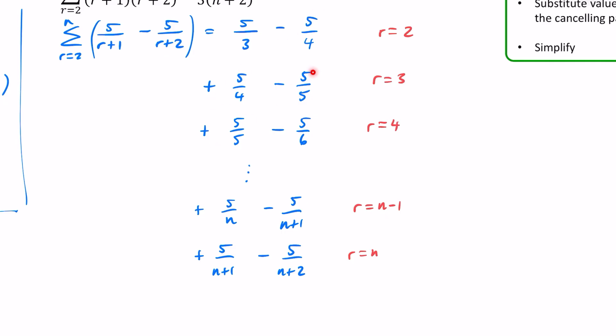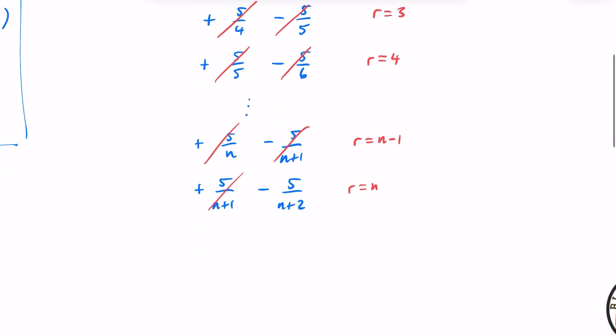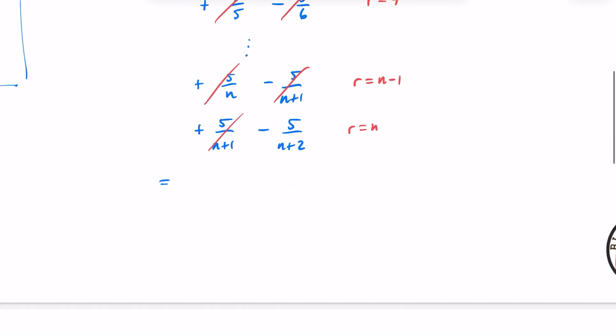So we get these cancel, those and these, leaving us just with 5/3 minus 5/N minus 5/(N+2). So this is 5/3 minus 5/(N+2).